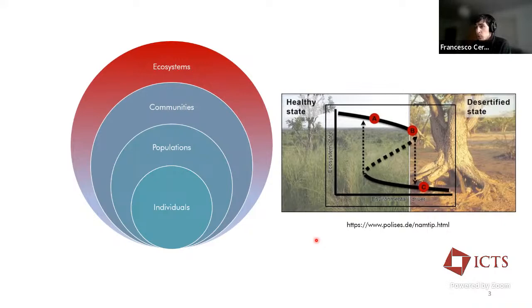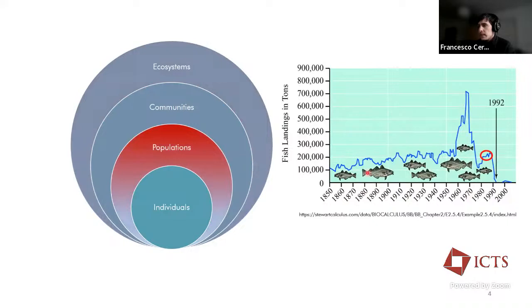But of course, even down the complexity scale at the population level, we can observe abrupt changes if we monitor, for example, the population abundances through time, like this historical cod data example that went through almost a collapse up to the extinction of the population. And so there are phases in which we could potentially observe tipping points and early warning signals, but let's go with order.